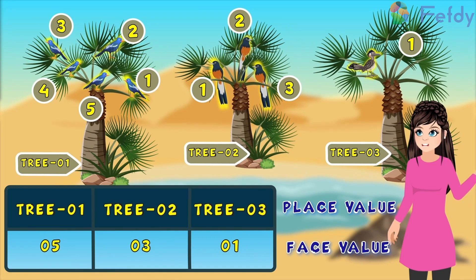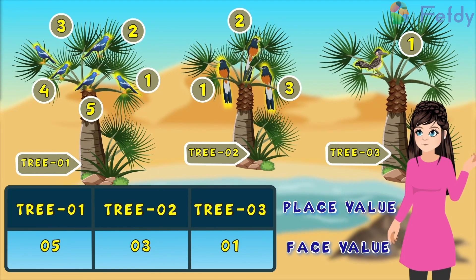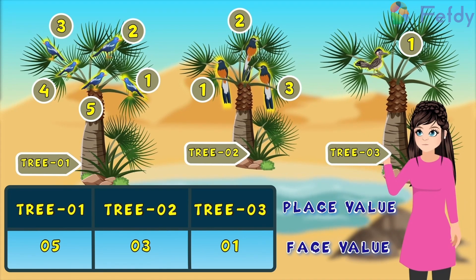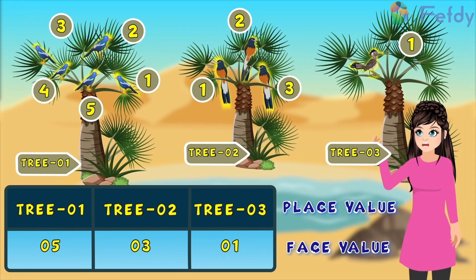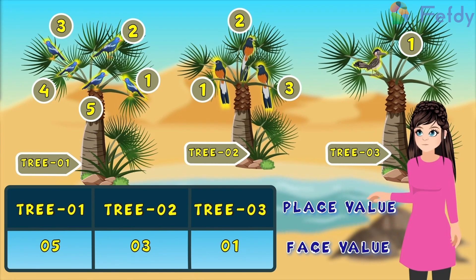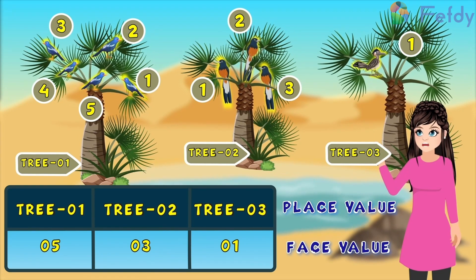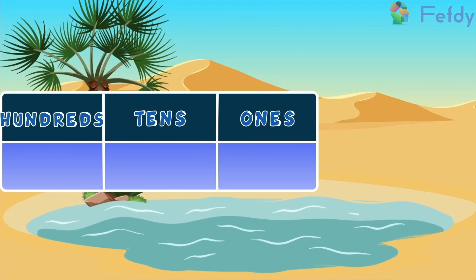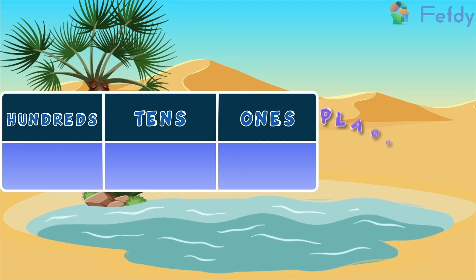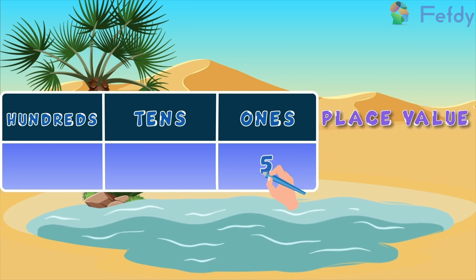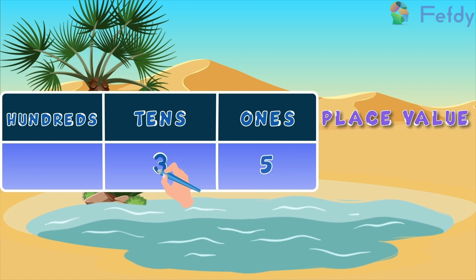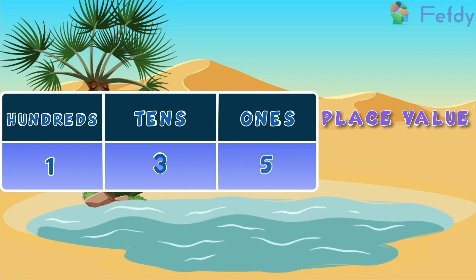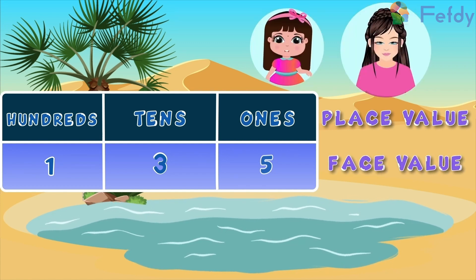Okay kids, place value and face value allow you to read, write, compare and perform operations with numbers accurately. Alright, children, let's all take out our learning kits. Ones, tens and hundreds is called place value, and the numbers that are written under these are called face value.